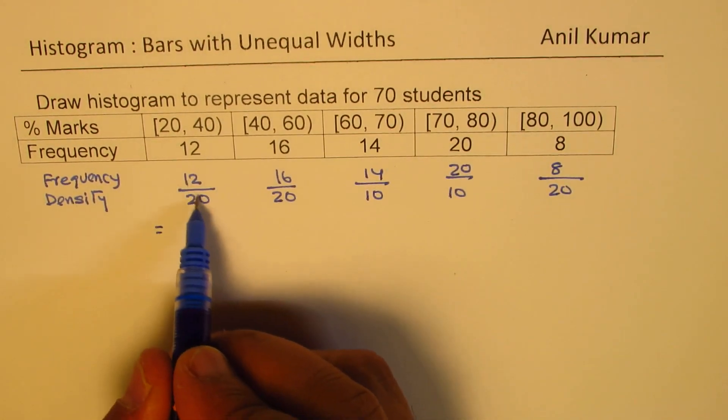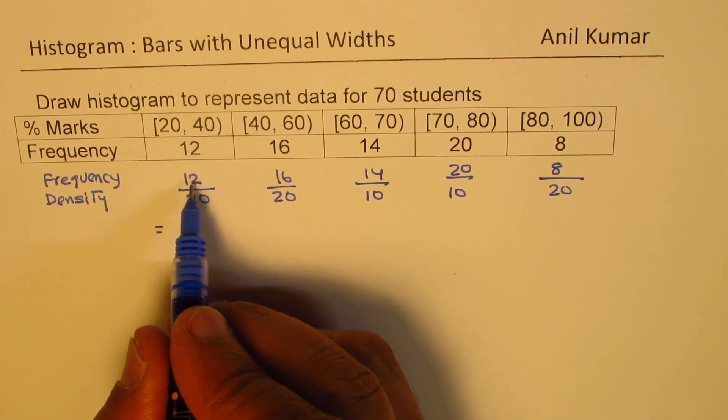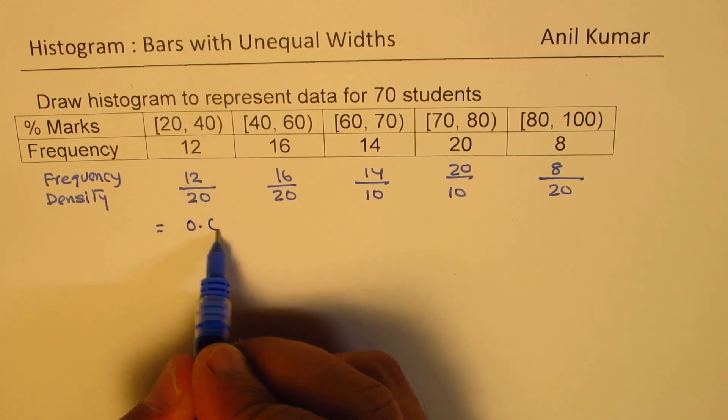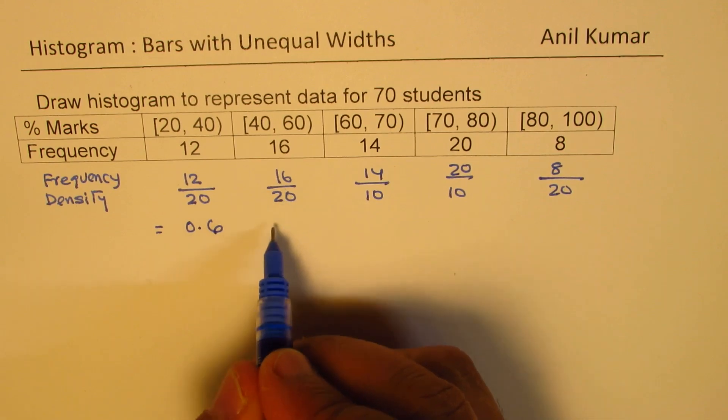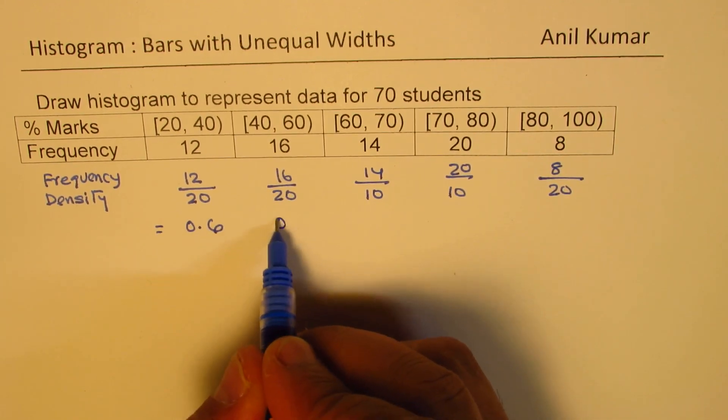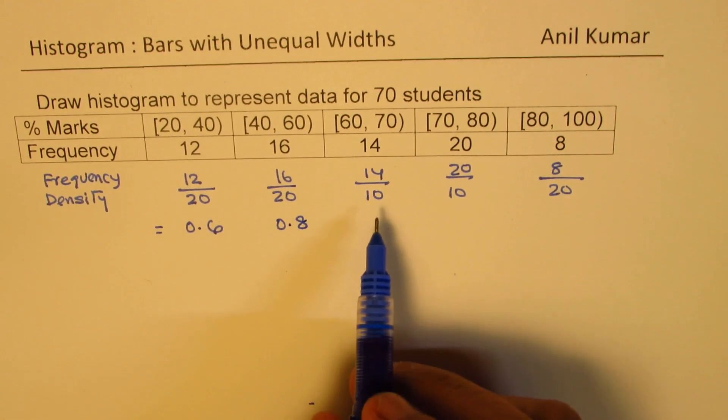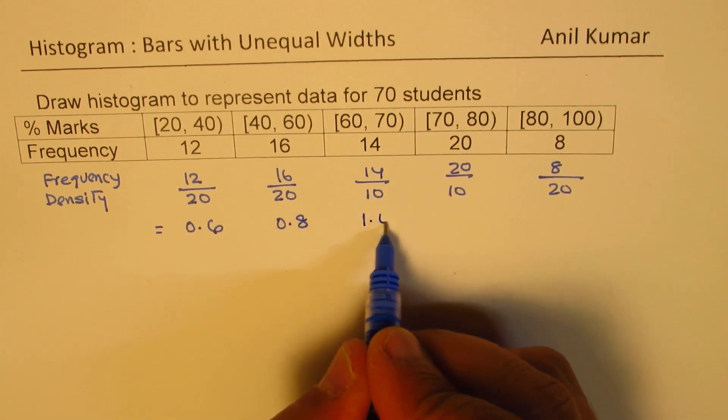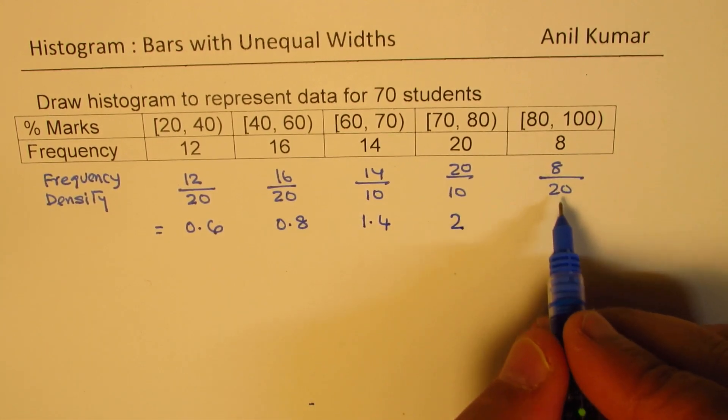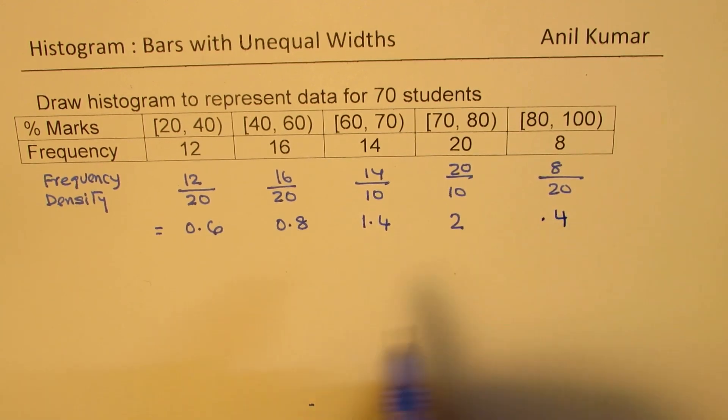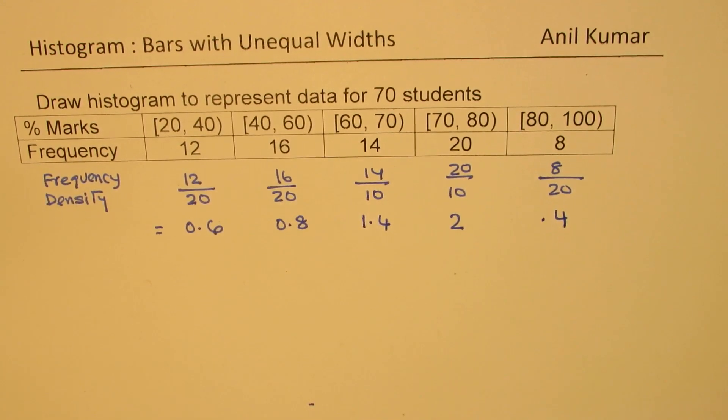When you divide, you get 0.6, then 0.8, then 1.4, then 2, and finally 0.4. So that becomes our frequency density. This is a very important column.